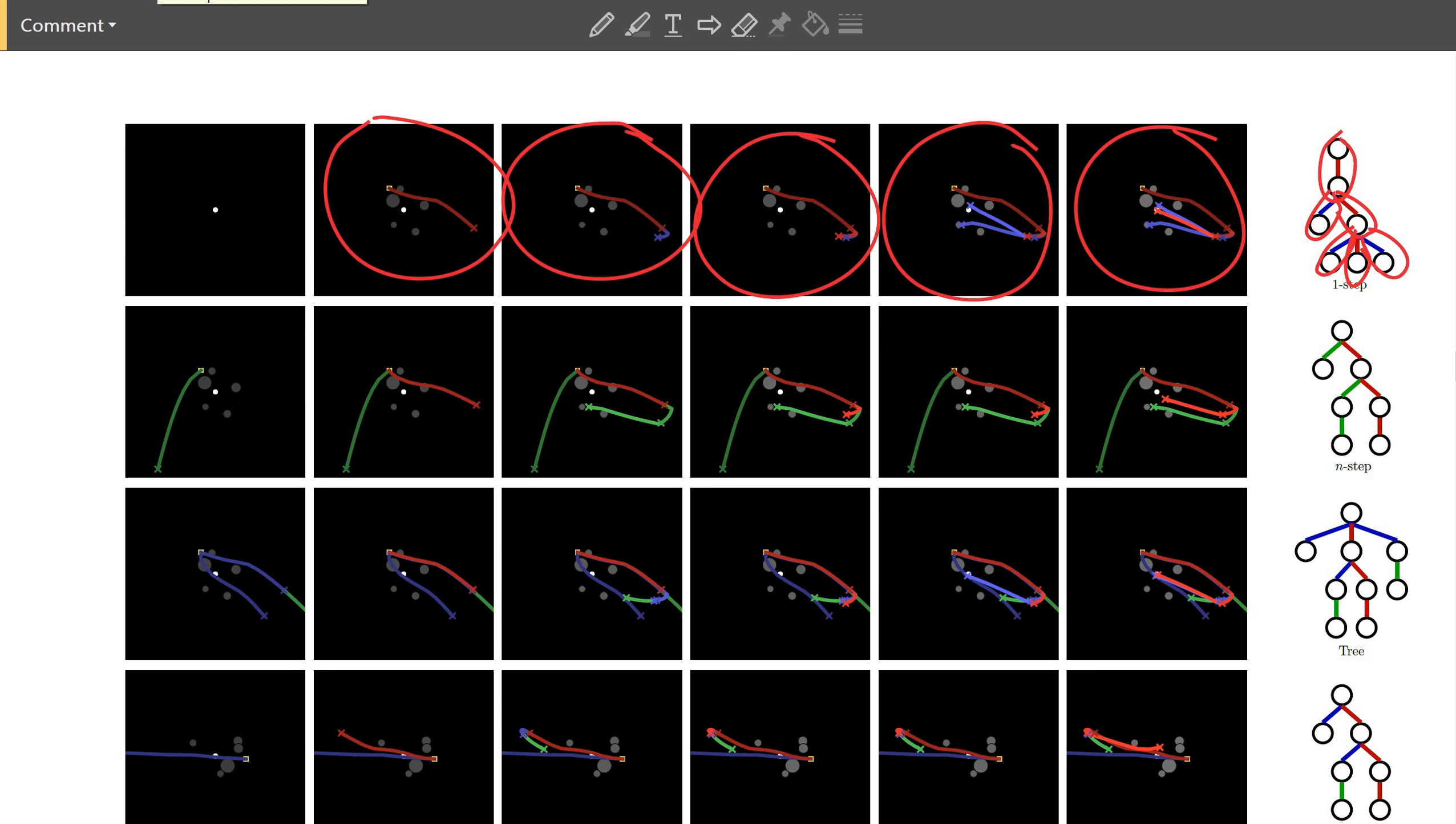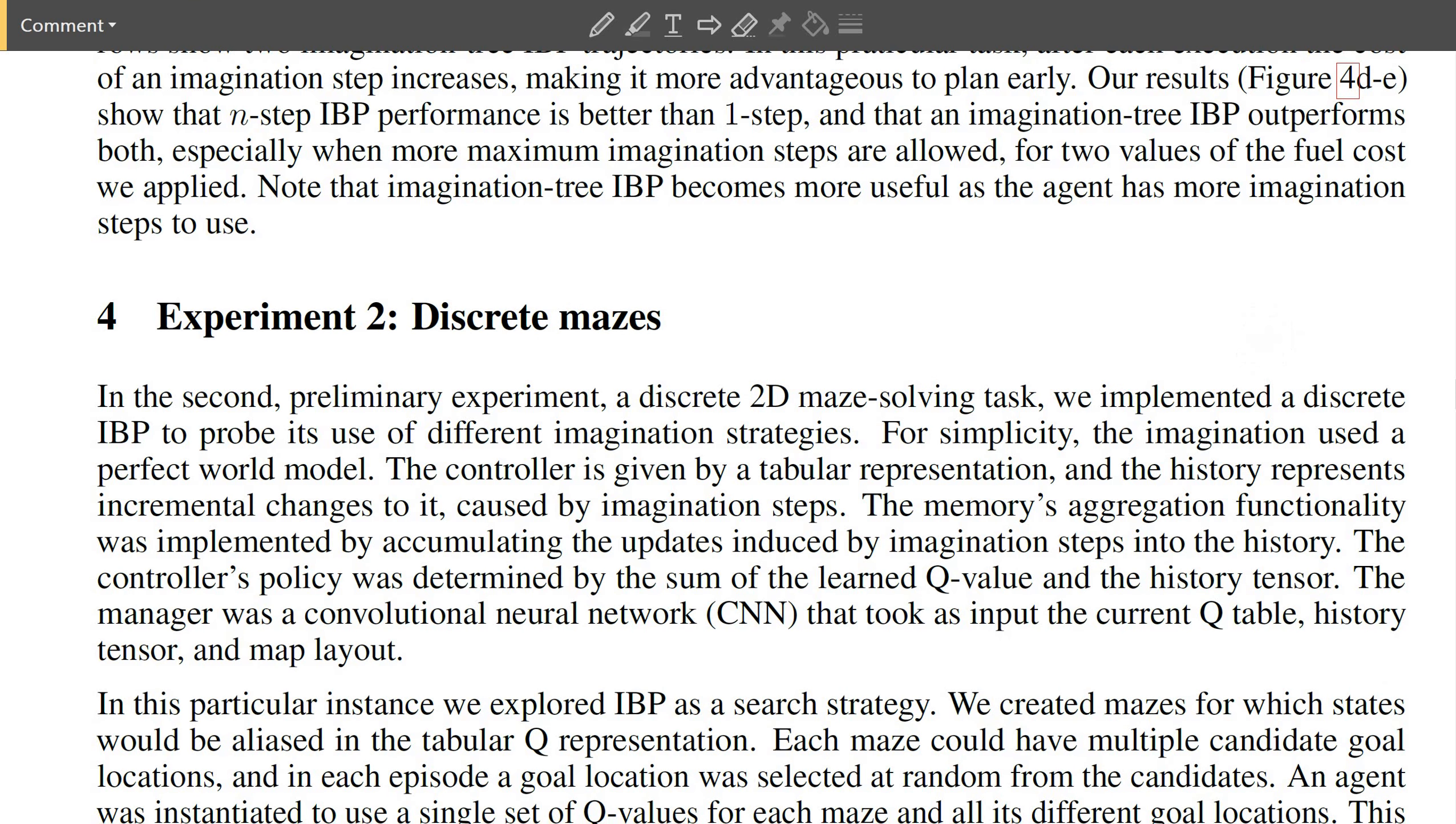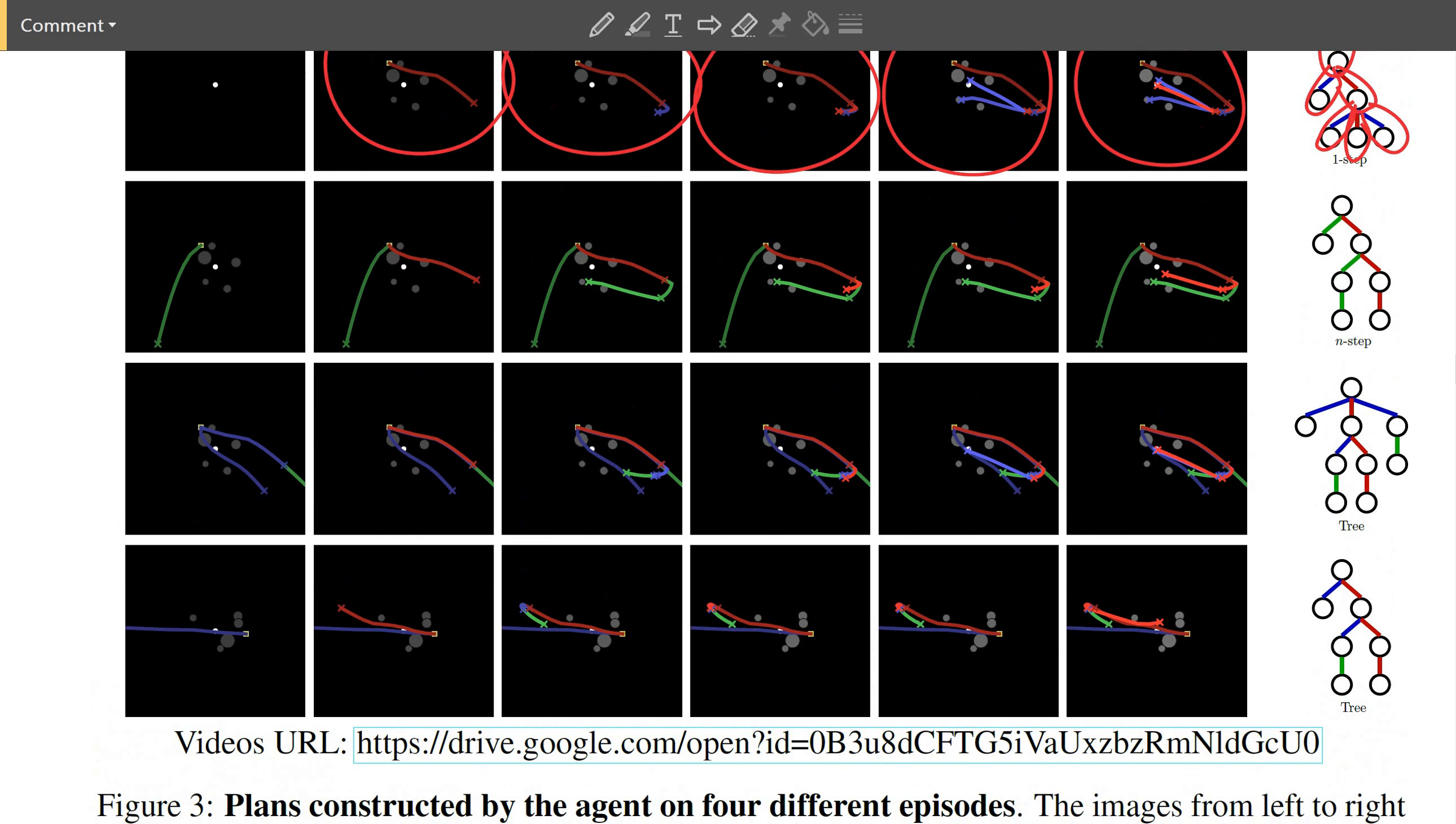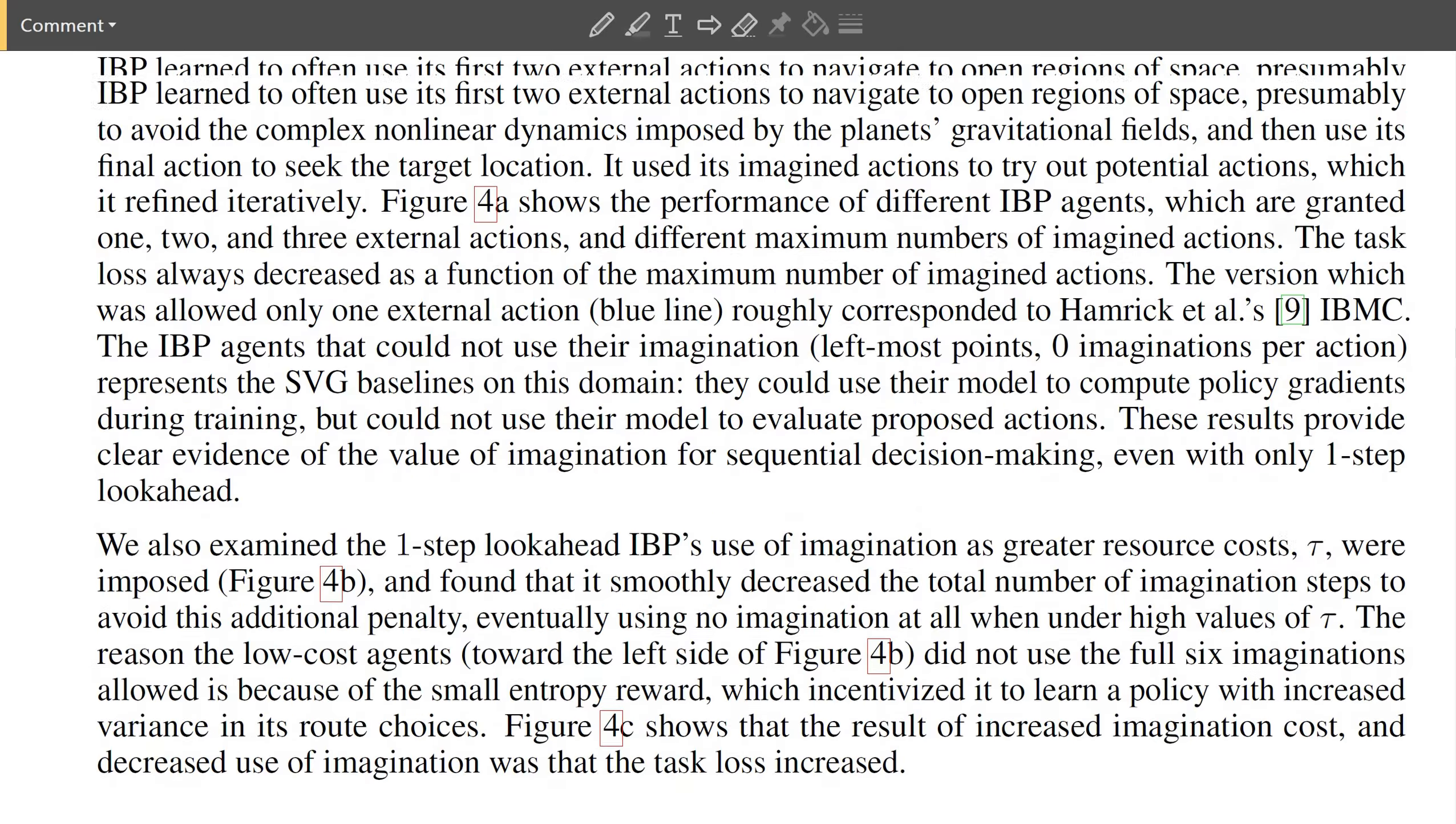So these things are pretty cool to look at and check out the more experiments if you want to know. Here is even more experiments in discrete mazes. They feature multiple goals. They feature the system optimizing not only for its reward, but also for internal costs. So having a budget for imagining and optimizing, not doing too many imagination steps.